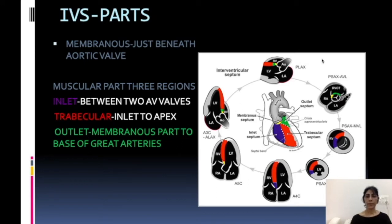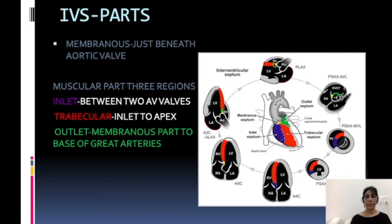Now let us go to the parts of the septum as seen in different views. Starting with the parasternal long axis view: you can see the aorta, left ventricle, atrium, and right ventricle. The part of the septum near the aorta is the membranous part. Just next to it is the outlet part, and then what you see beyond that is the trabecular part. So in the parasternal long axis view, you primarily see the trabecular part, a small area of the outlet, and a small area just next to the origin of the aorta which is the membranous part.